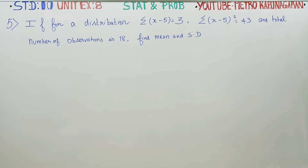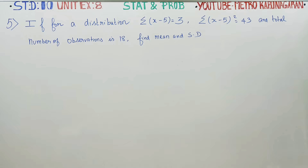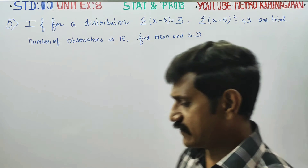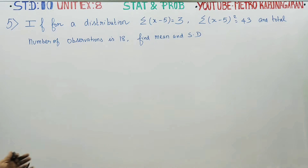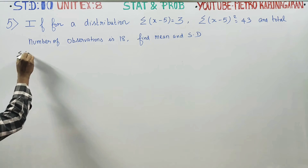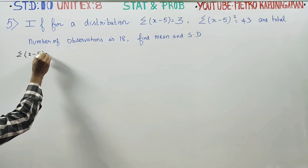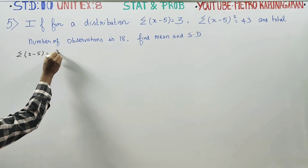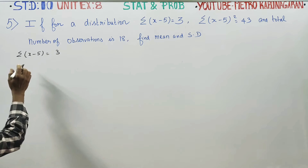Dear 10th standard students, in unit exercise number 8, sum number 5, if for a distribution sigma x minus 5 is equal to 3 — that is our first information. And sigma n is equal to 5, so we have sigma x minus sigma x, because this is a changing number.